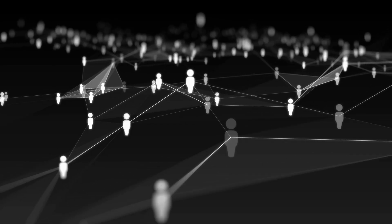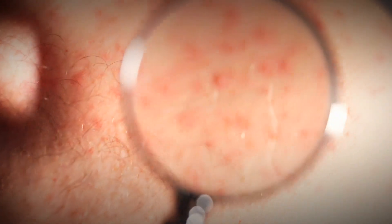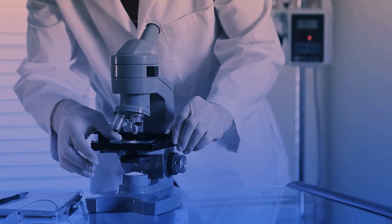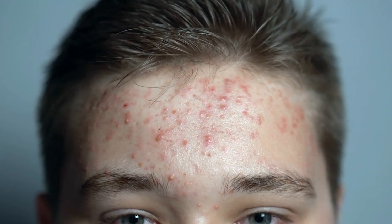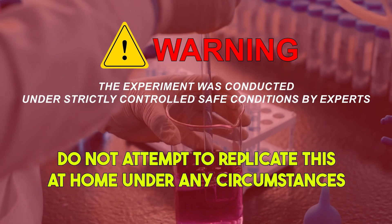With a global population exceeding 8 billion people, everyone will, at some point, experience acne, whether it's on the scalp, armpits, chest, or buttocks. Not everyone is familiar with all types of acne. To the naked eye, acne may not seem particularly alarming — it merely makes the skin less aesthetically pleasing. But when viewed under a microscope, acne reveals itself as terrifying clusters of bacteria, resembling scenes straight out of a horror movie. Today, we will take you on a journey to explore different types of facial acne, including hidden acne, inflammatory acne, blackheads, cystic acne, and the most frightening of all — boils — under a microscope. We will observe all these types from the naked eye to the microscopic level. The experiment was conducted under strictly controlled, safe conditions by experts. Do not attempt to replicate this at home under any circumstances.